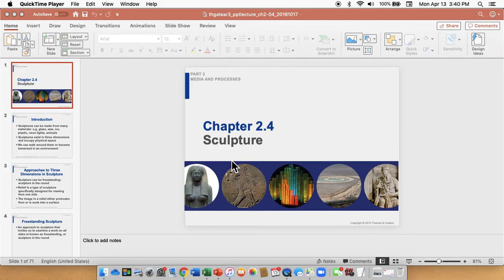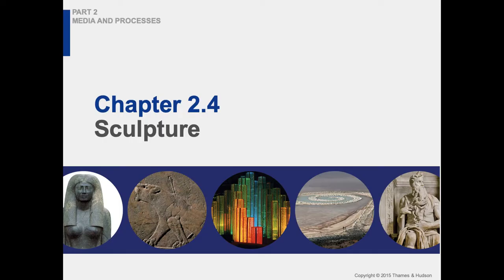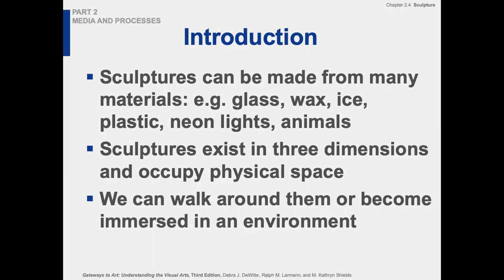Chapter 2.4 Sculpture, Video One. We're going to look at a number of different types of sculptures: some traditional in-the-round, relief, more modern assemblage or fabricated pieces, installation or earthworks, and then various other sculptures that are carved, sculpted, or modeled.